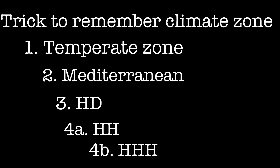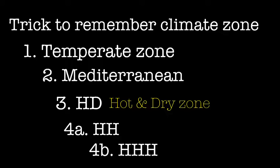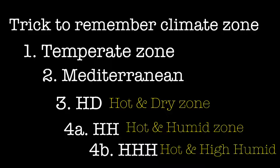For Zone 3, remember 'HD' (Hot and Dry). For Zone 4a, remember 'double H' (Hot and Humid). For Zone 4b, remember 'triple H' (Hot and High Humid). So the shortcut sequence is: Temperate → M (Mediterranean) → HD → Double H → Triple H, covering all five zones.